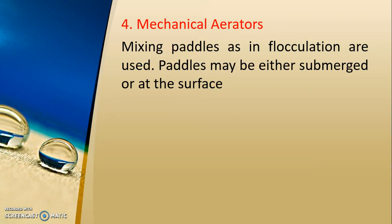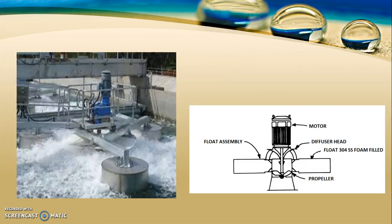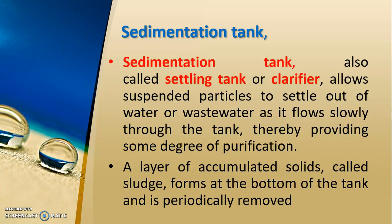Next are mechanical aerators, where mixing paddles — as in flocculation — are used. Paddles may be either submerged or at the surface, providing turbulence to expose water to the atmosphere. After aeration, water goes to the sedimentation tank, also called a settling tank or clarifier. Sedimentation tank allows suspended particles to settle out of water as it flows through the tank, providing some degree of purification. A layer of accumulated solids called sludge forms at the bottom and is periodically removed.